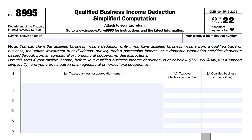Going over IRS Form 8995, the Qualified Business Income Deduction Simplified Computation. The first thing we should cover is Qualified Business Income and whether you should use Form 8995 or 8995-A, the Qualified Business Income Deduction. You may use Form 8995 to determine your Qualified Business Income Deduction if the following apply.